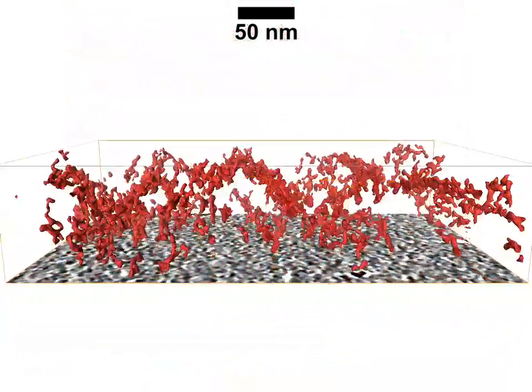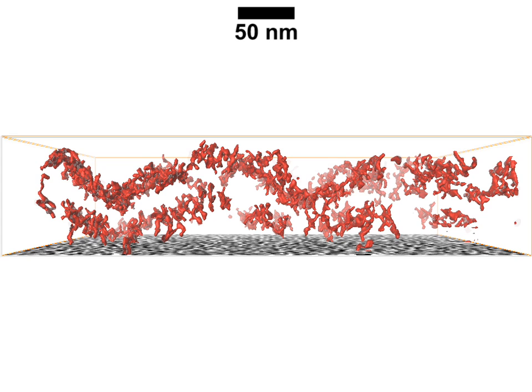The isosurface is rotated to present a view perpendicular to the sacculus long axis. Note that after collapsing, the sacculus appears corrugated.